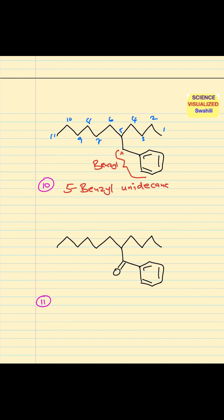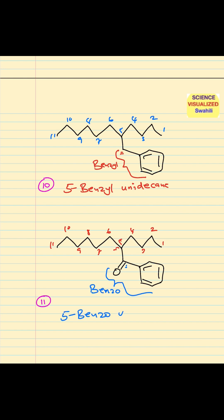Next — again from the right, counting to eleven. The substituent is at position number five. When you have a benzene ring connected to a carbonyl — carbon double bond oxygen — that's called a benzoyl group. Therefore, the name becomes 5-benzoylundecane.